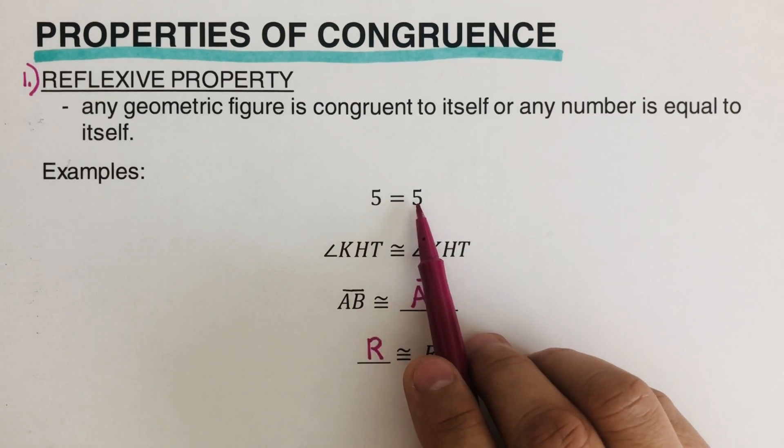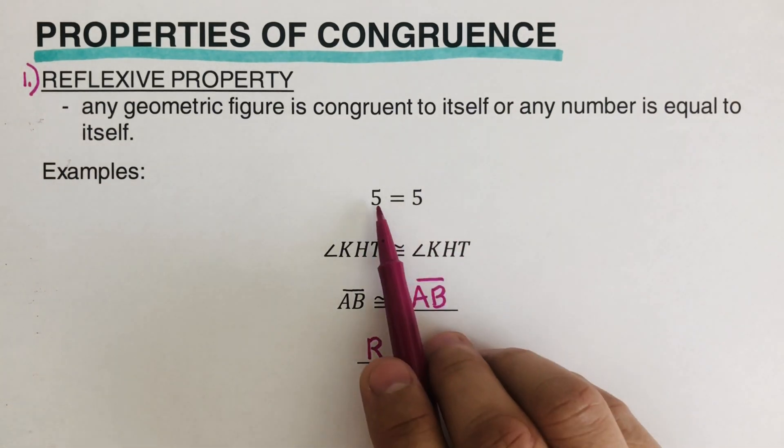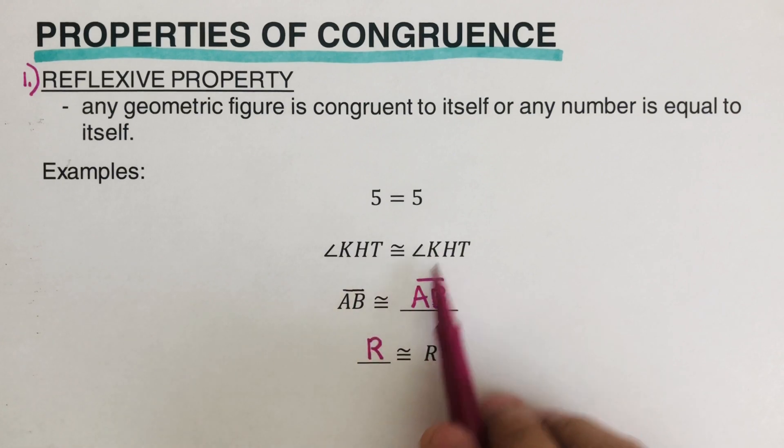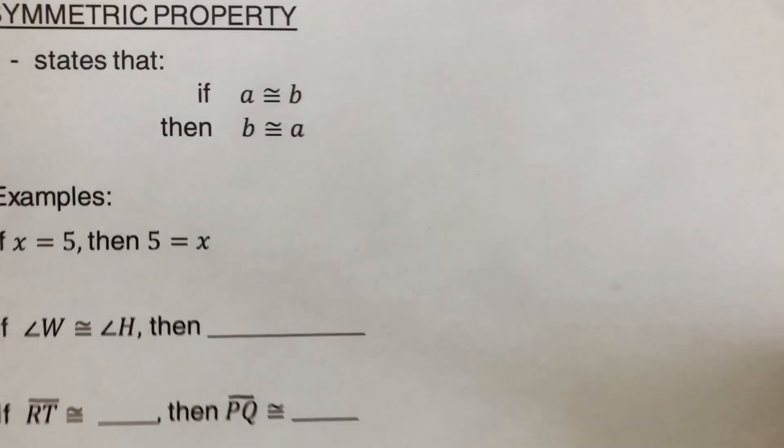You wouldn't be able to see 6 in there, or 7 or 8. So it has to be itself. So angle KHT is angle KHT. They're pretty much the same thing. Okay, let's take the second example right here.